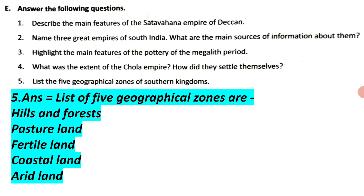Question 5: List the five geographical zones of the Southern kingdoms. Answer: The five geographical zones are: Hills and forests, Pasture land, Fertile land, Coastal land, and Arid land.